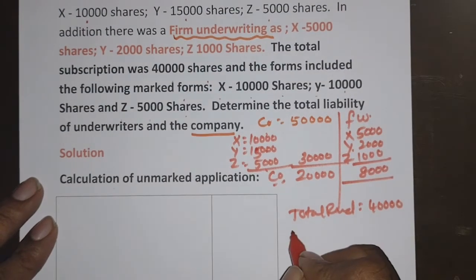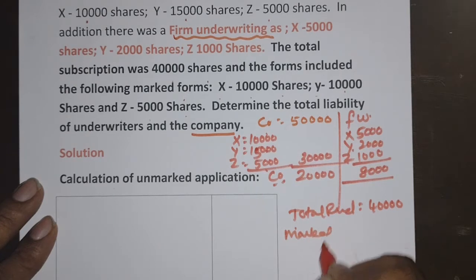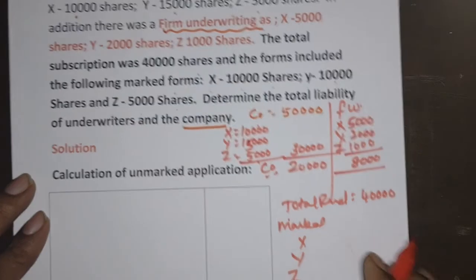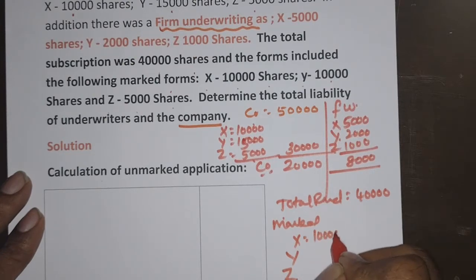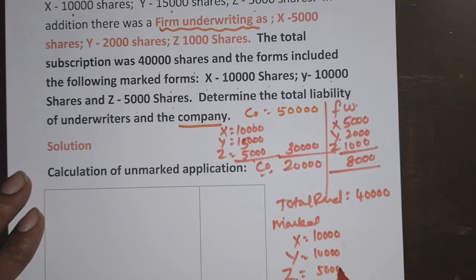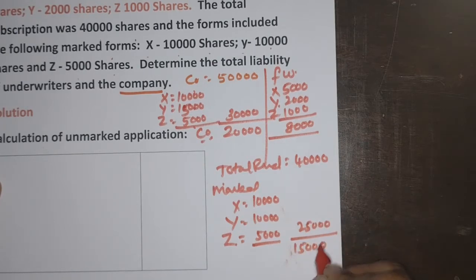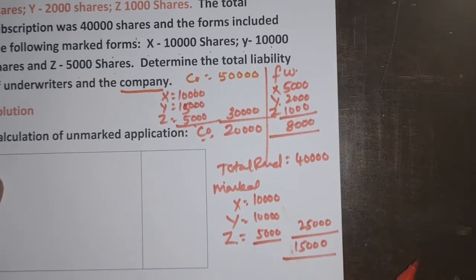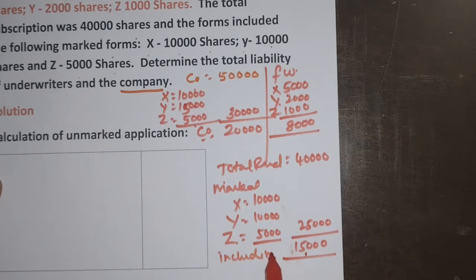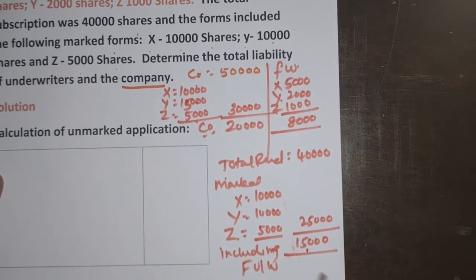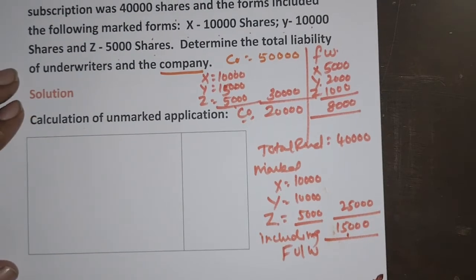Total applications received: 40,000. Of which, marked applications: X — 10,000, Y — 10,000, Z — 5,000, overall 25,000. Therefore, unmarked applications = 15,000. When nothing is specified, this 15,000 is understood as including firm underwriting.